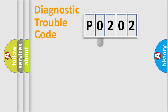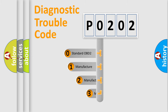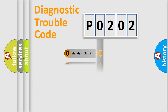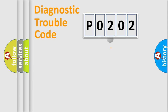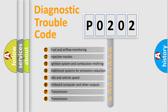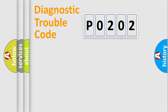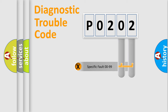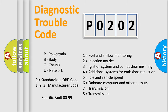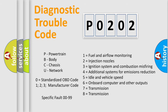This distribution is defined in the first character of the code. If the second character is expressed as zero, it is a standardized error. In the case of numbers 1, 2, or 3, it is a manufacturer-specific error. The third character specifies a subset of errors. Only the last two characters define the specific fault of the group, and this division is valid only when the second character is zero.